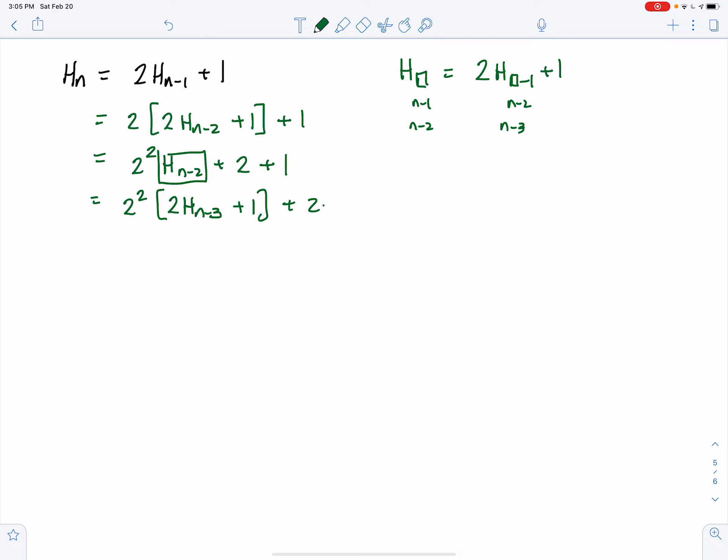And don't forget the plus 2 plus 1 that carries over from the previous step. So that's going to be 2³ h_{n-3} plus 2² plus 2 plus 1.